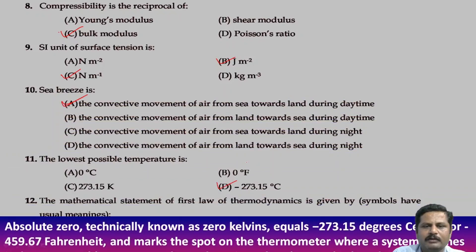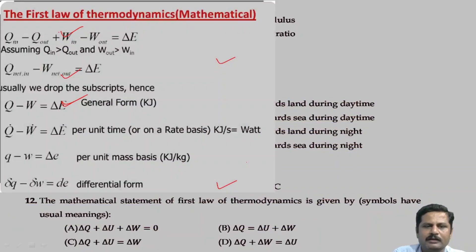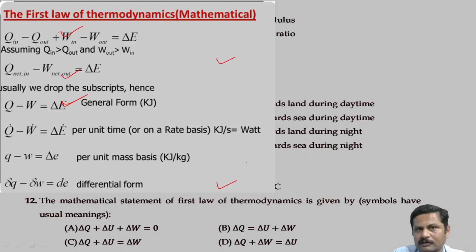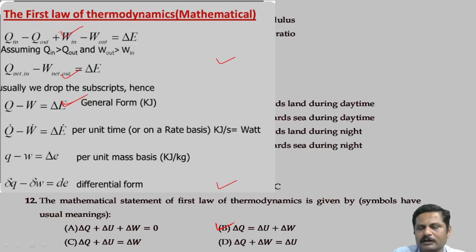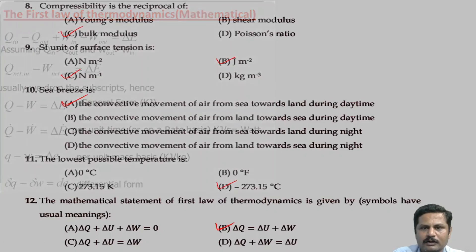The mathematical statement of the first law of thermodynamics: the heat energy supplied to the system is used in two ways — some part increases the internal energy of the system, and some part is used to do external work. So option B is the right answer. Here, ΔQ is the amount of energy supplied to the system, ΔU is the increase in internal energy, and ΔW is the external work done by the system.